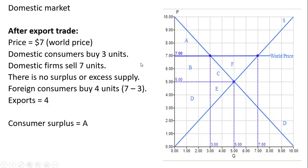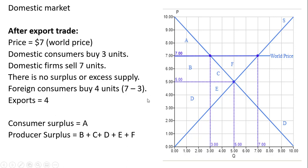In terms of consumer surplus, consumers are now paying higher prices and buying less. Consumer surplus is just the area between the height of the demand curve and the price of $7, up to three units — represented by triangle A. Producer surplus is the difference between the $7 price and the supply curve up to seven units — this big triangle covering areas B, C, D, E, and F.